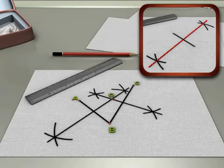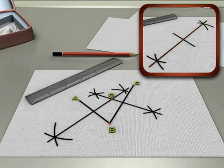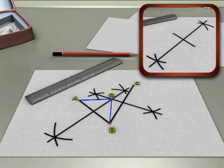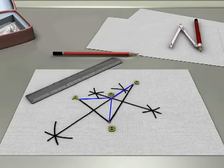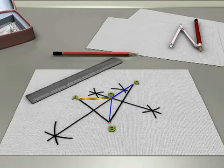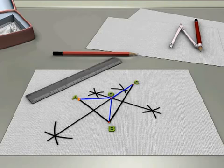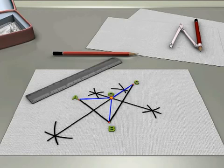Since every point on the perpendicular bisector of a line segment is equidistant from its endpoints, we get OA is equal to OB, and OB is equal to OC. This further implies that OA, OB, and OC are equal. This means that points A, B, and C are equidistant from the point O.